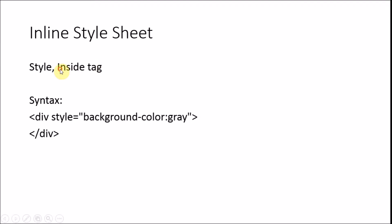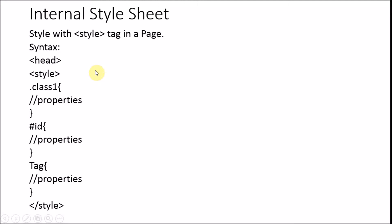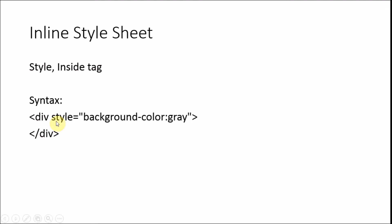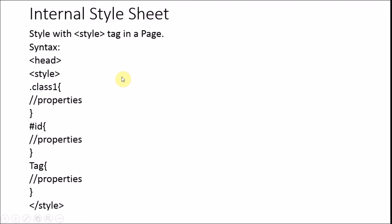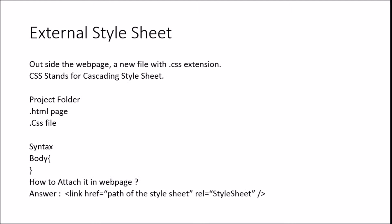First we talk about the inline stylesheet — style inside a tag. When we apply style inside a tag like a division, we apply the style attribute with background-color set to gray. For the internal stylesheet, that is the style tag within the head section, and we can use it for class, ID, and tags with properties like background-color, foreground color, width, height, margin, etc.